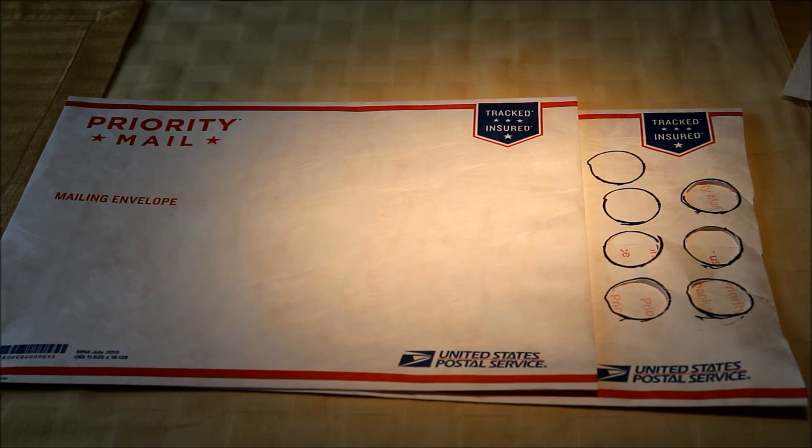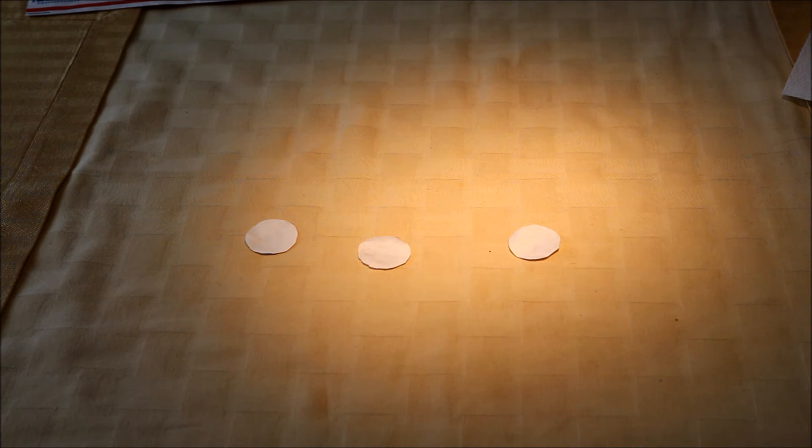Okay, we're going to need some Tyvek circles. Now, these envelopes you can get for free at the post office near the automated shipping kiosks. You're going to trace the bottom of the bottle and cut it out with a pair of scissors. So now you should have some Tyvek circles that are the right size as the bottom of the bottles.